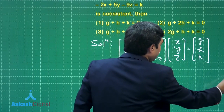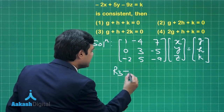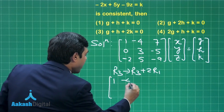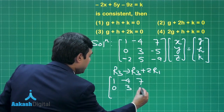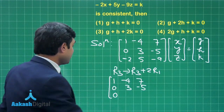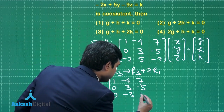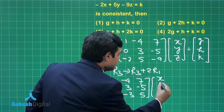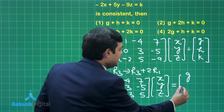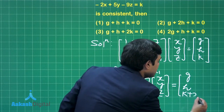My objective is to make elements zero by row operations. I replace R3 with R3 + 2R1, giving the matrix [1, -4, 7; 0, 3, -5; 0, -3, 5] on the left. The right-hand side becomes [g, h, k + 2g].